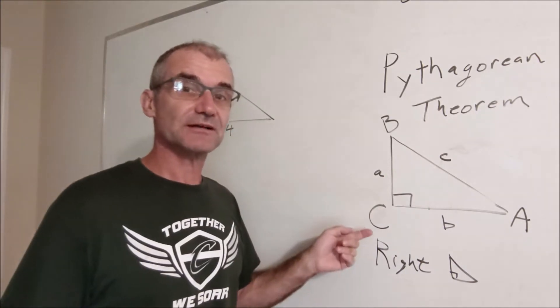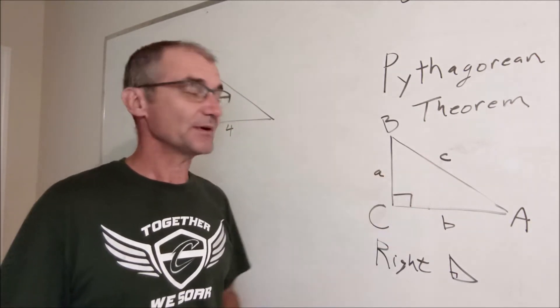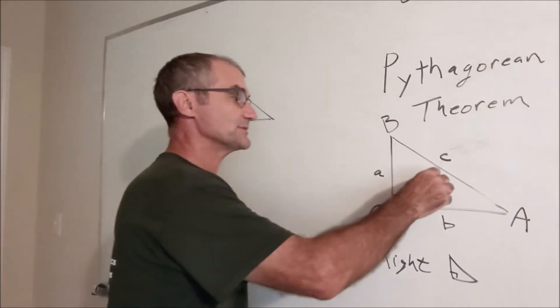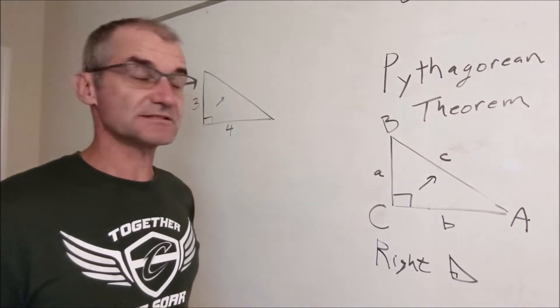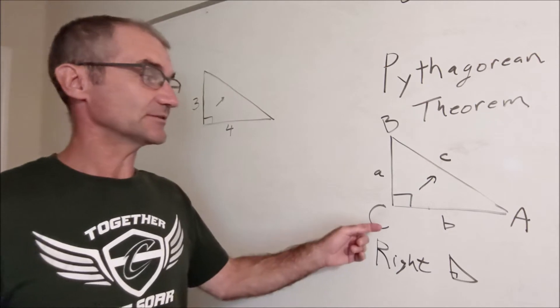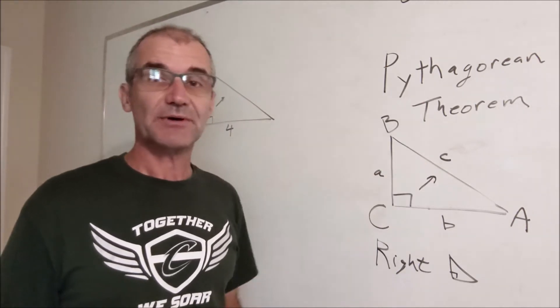In any right triangle there's always two legs and a hypotenuse. The hypotenuse is always opposite the right angle and it is also the longest side in any triangle.